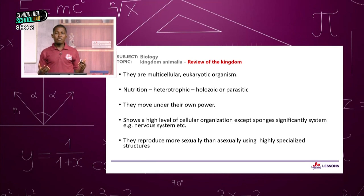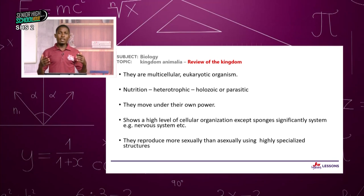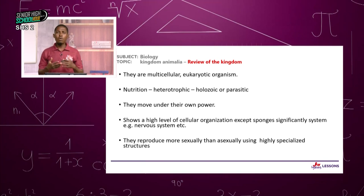A few animal-like organisms we saw were in Protoctista — usually animals at the cell level. But the organisms we are going to study in Kingdom Animalia, usually except a few like sponges, are at cellular level. All the organisms we'll talk about are usually at tissue level or above — either tissue level, organ level, or system level. Usually animals are at system level.